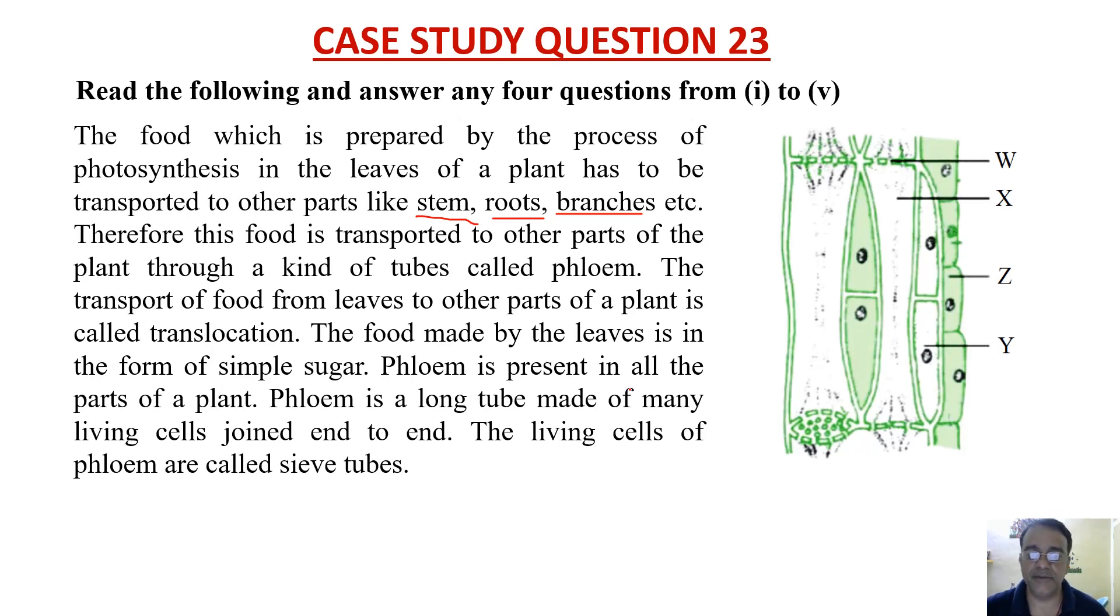The transport of food from leaves to other parts of a plant is called translocation. The food made by the leaves is in the form of simple sugar.